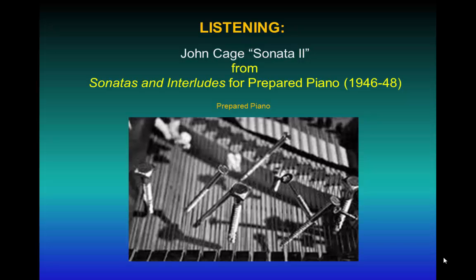There are four white emotions — humor, wonder, erotic, and heroic, accepting one's experience in Cage's words — and four black emotions: anger, fear, disgust, and sorrow. As you listen to this, try to imagine which rasa is implied by Sonata II. Cage did not specify.